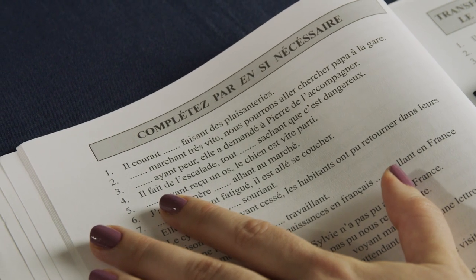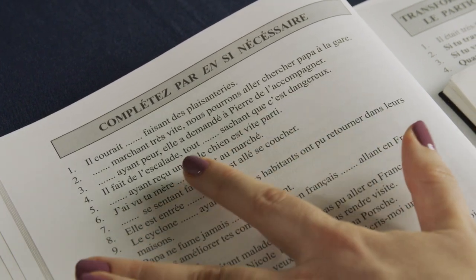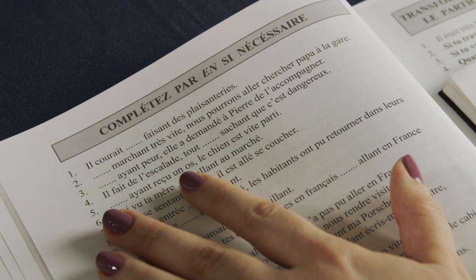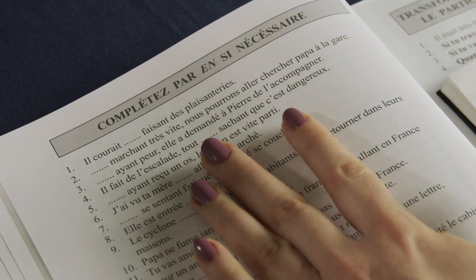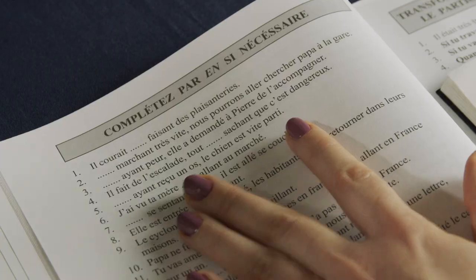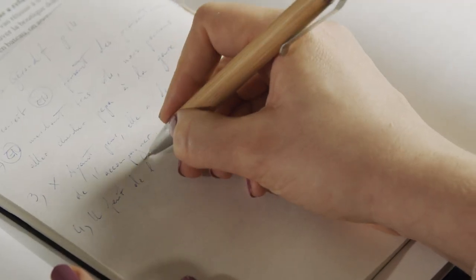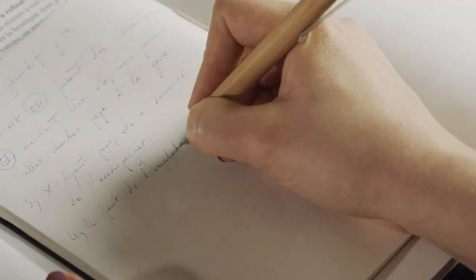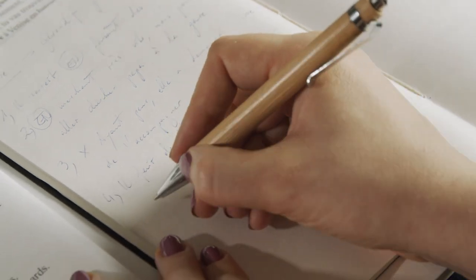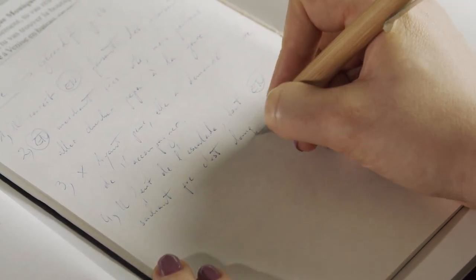Number four: Elle fait de l'escalade tout sachant que c'est dangereux. So we just had the part about tout being used as an emphasis. So she was climbing, I think, all while knowing that it was dangerous. Tout en sachant que c'est dangereux. Again it happens at the same time and it's the same subject. Elle fait de l'escalade tout en sachant que c'est dangereux.